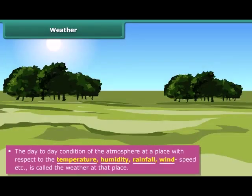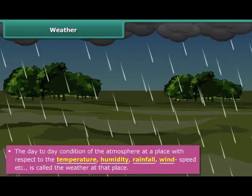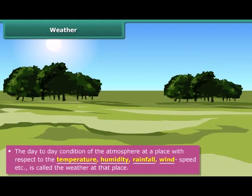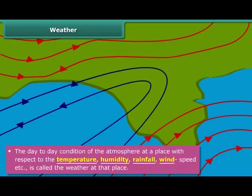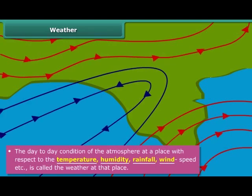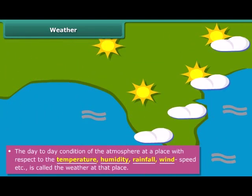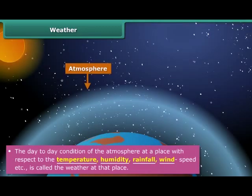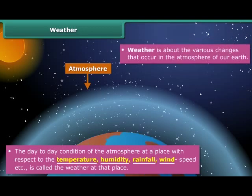You might have come across the situation that a sunny morning suddenly changes to a cloudy day and it starts raining heavily, or heavy rain vanishes within a few minutes and gives way to bright sunshine. This is called a change in weather. Temperature, humidity, rainfall, wind, and other factors are called the elements of weather. Weather is about the various changes that occur in the atmosphere of our earth.